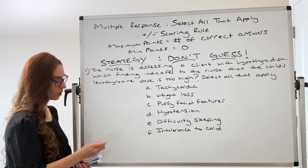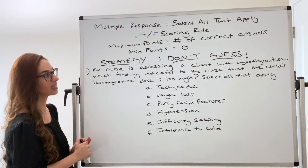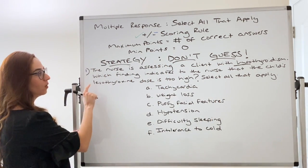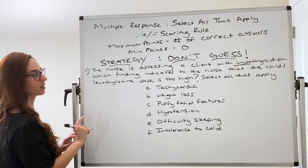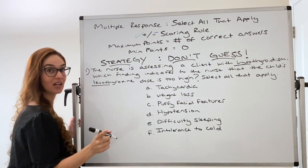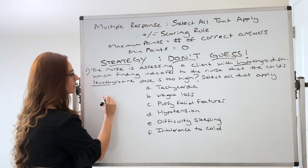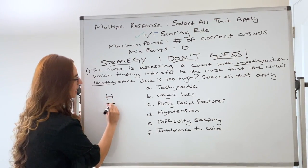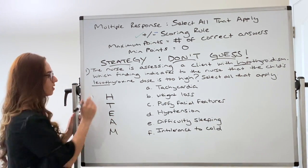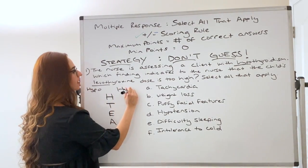Alright. So when you read the question it said the nurse is assessing a client with hypothyroidism. Which finding indicates to the nurse that the child's levothyroxine dose is too high? So I don't know what acronym your teachers gave you but I always give this acronym to my students: HT for hypo and hyperthyroidism.